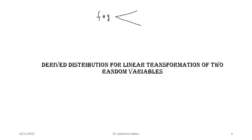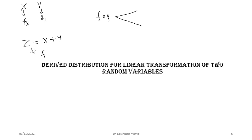Why is convolution needed? Suppose we have a random variable X with distribution f(x) and another random variable Y with distribution g(y). We define Z = X + Y as a linear function of X and Y. The question is: what is the distribution of Z? We can find the distribution of Z as a convolution of the distributions of X and Y.